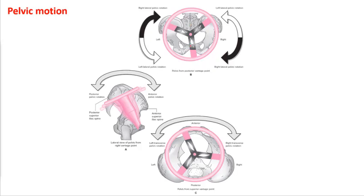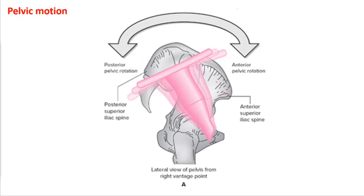These images are great because they kind of show the force couple activities that are happening. The anterior and posterior pelvic tilt is probably the easiest to visualize. If you visualize the pelvis as a bowl, and if you were to have water come out of the front of the bowl, this would be an anterior pelvic tilt. If you tilt it backwards and have water come out of the back, you'd have a posterior pelvic tilt. That's your sagittal plane movement — either tucking your tail under for a posterior pelvic tilt, or sticking your butt way out for an anterior pelvic tilt.